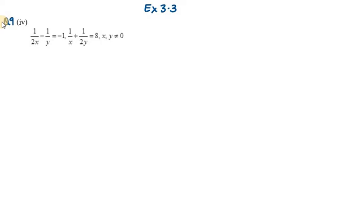Here what we need to use is reducible form. We need to let 1 over x as a and 1 over y as b. Why I am taking this is because I want my variables to be at numerator. Therefore I would be taking 1 over x as a and 1 over y as b.